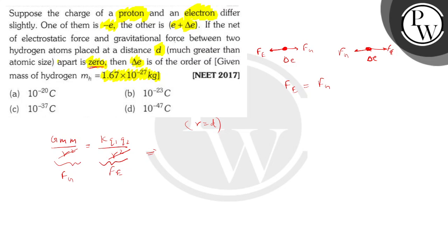Now, let's substitute the given values. We know that G = 6.67 × 10^-11. And m = 1.67 × 10^-27 whole square. And then we have the value of k which is 9 × 10^9. And the value of Q².